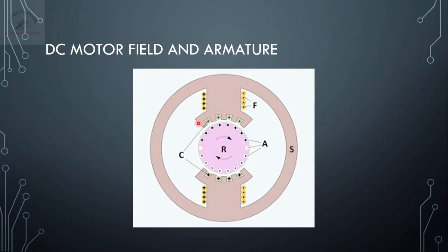These are the compensating windings used to reduce armature reaction. The dot and cross symbols here indicate the direction of current — dot means current is coming out, cross means current is going into the plane, called arrow tip and arrow tail. From the right hand clasp rule we can identify the direction of the magnetic field. In a DC motor, the armature is the rotor and the field is the stator. How the field windings and armature windings are connected defines what type of motor it is.